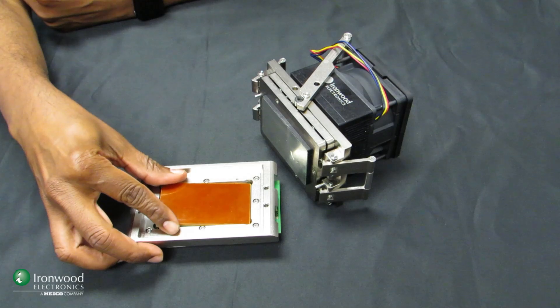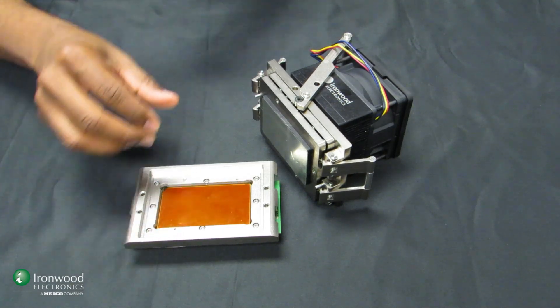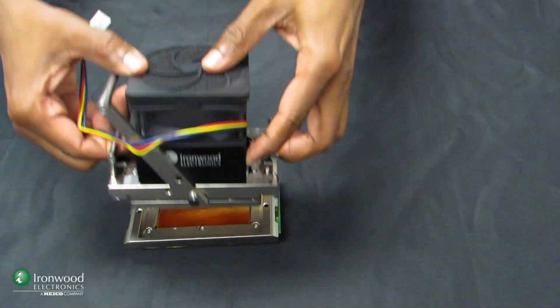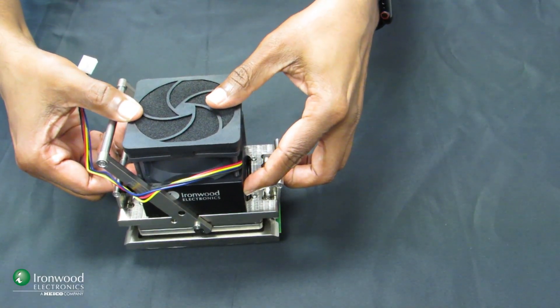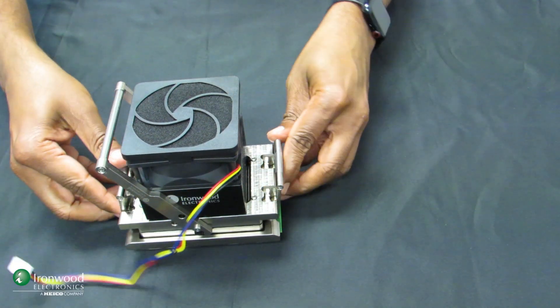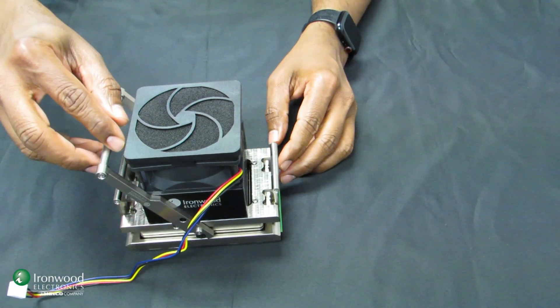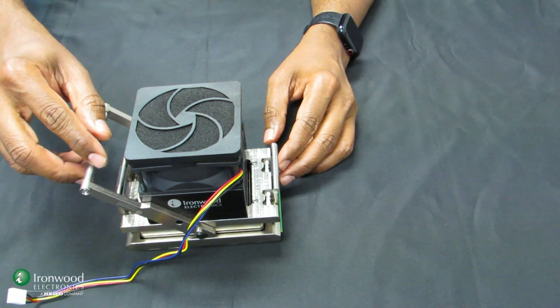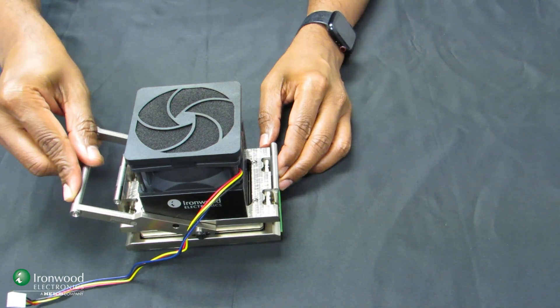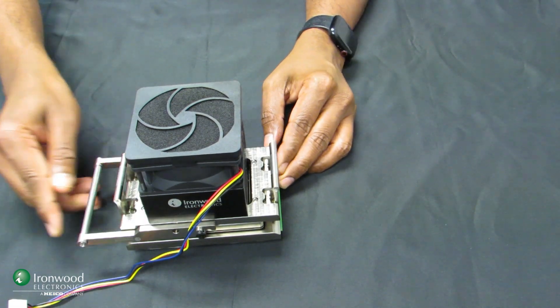To use the socket, the device is placed inside, the lid is assembled with a double latch, and the lever is actuated to compress the device and make a connection.